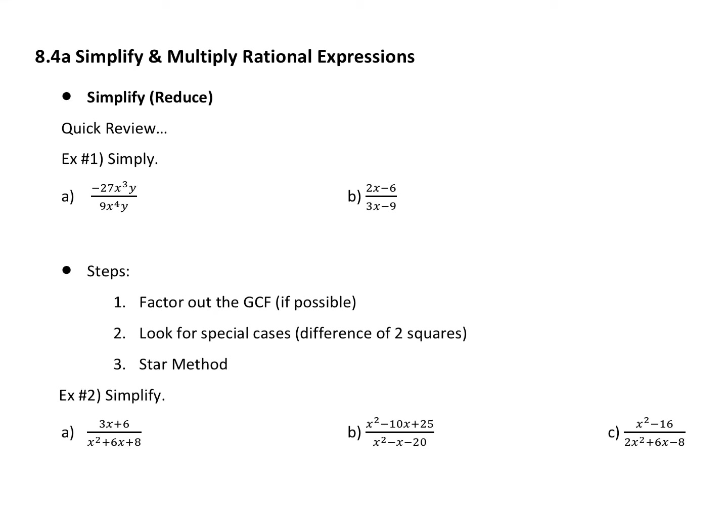Do you remember what a rational expression is? When you think rational, what do you think? What's a rational number? Something you can write as a fraction, right? A rational number is any number that you could write as a fraction. The number three is a rational number — three over one. The number two-fifths is a rational number. So if you can write it as a fraction, it's rational.